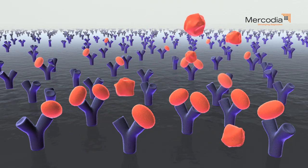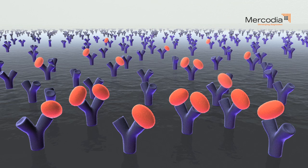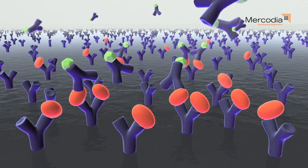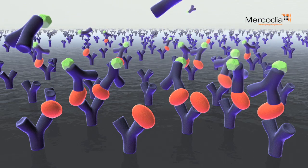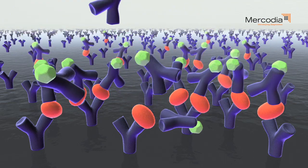Unbound compounds are removed by a washing procedure. The enzyme-linked detection antibody is added to the well. The detection antibody binds to a second epitope on the antigen.